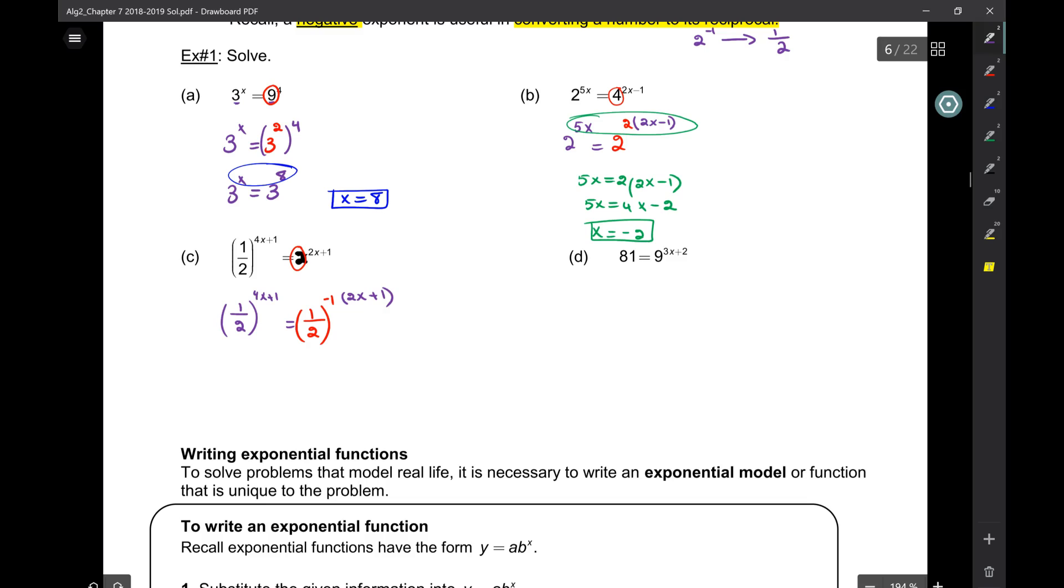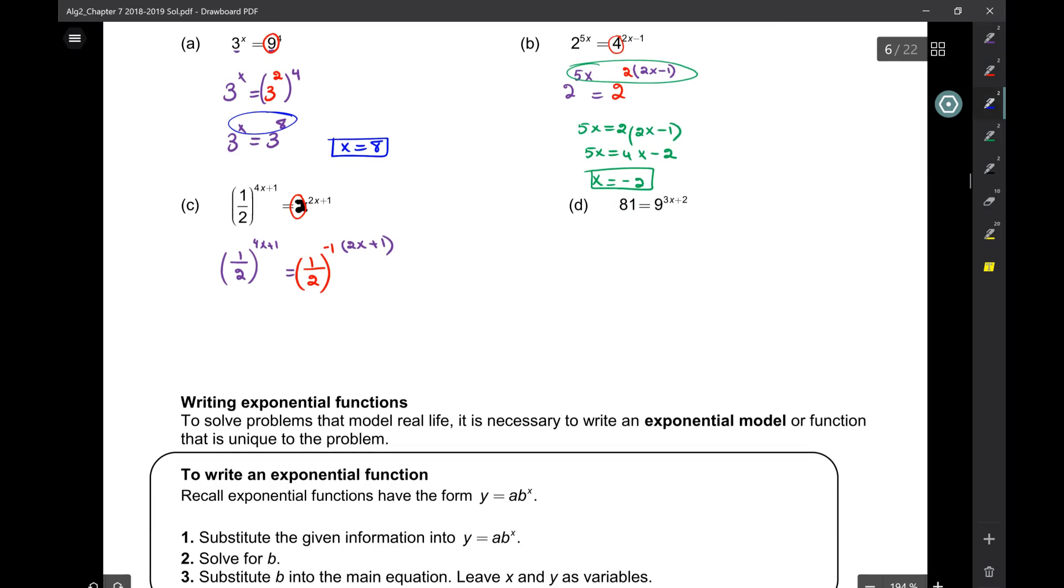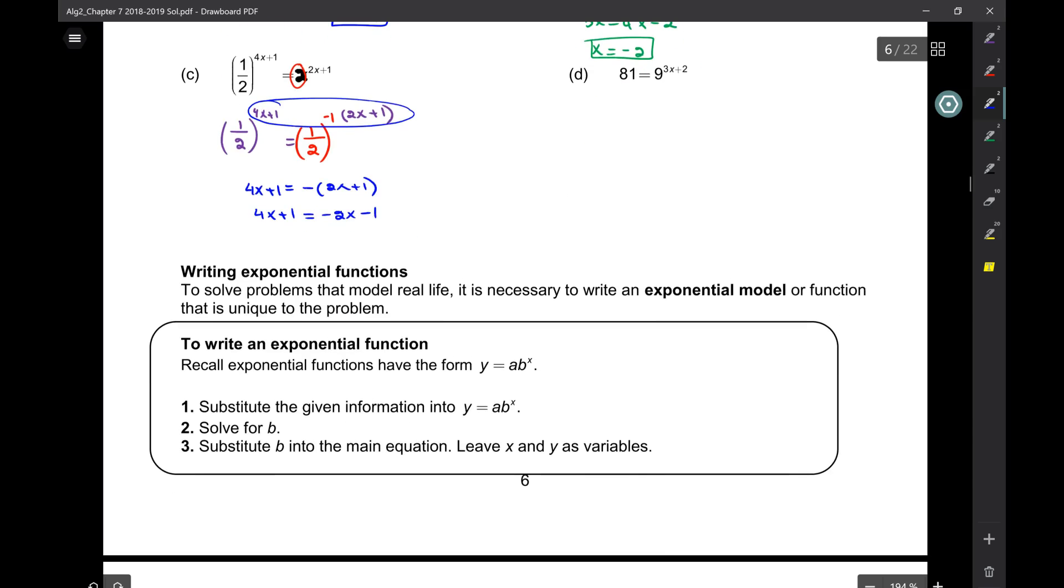Times 2x plus 1. So remember, if the 2x plus 1 is an exponent, it stays as an exponent. Be careful to not demote it to a coefficient. Now, am I ready to set them equal to each other? I am. So 4x plus 1 is negative 2x minus 1. 6x is negative 2. So x is negative 1 third.